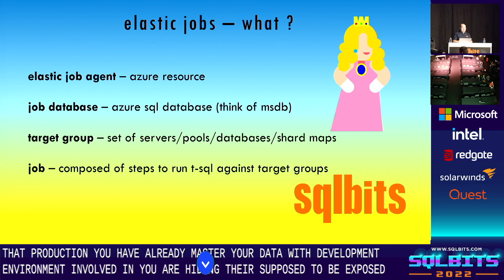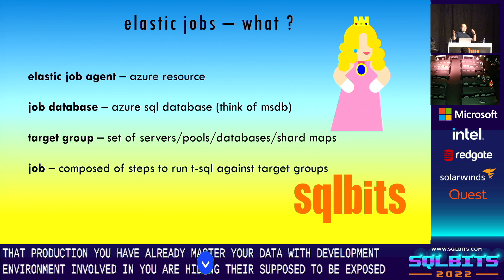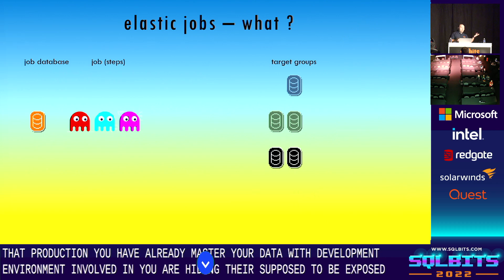There are four main components: the elastic job agent, which is like an agent on-premises; the underlying job database that stores procedures and tables, similar to MSDB on SQL Server on-premises; the target groups, where you configure databases, whole instances, shards, or pools — you can include or exclude objects; and of course, the job itself is the fourth component.